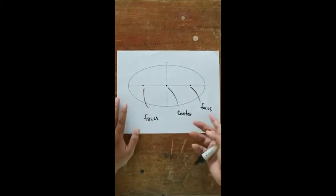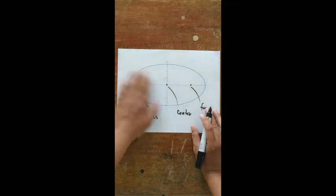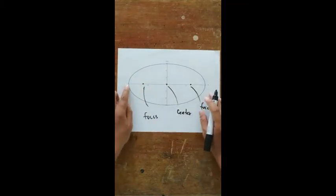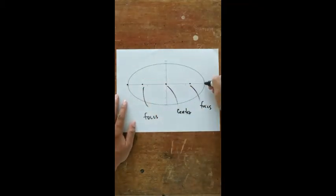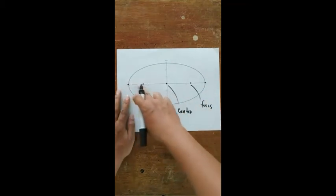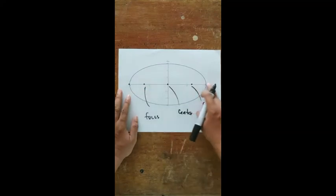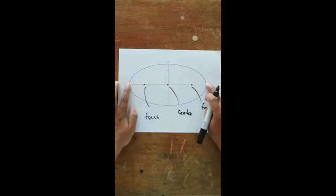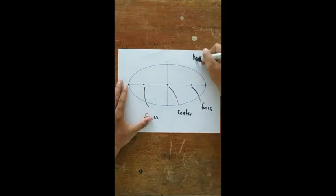The plural of focus is foci. The length from one end to the other — the longest diameter of an ellipse — is called the major axis. The endpoints of the major axis are called vertices.